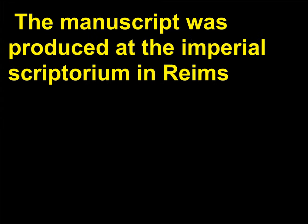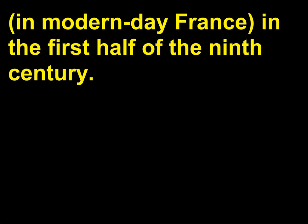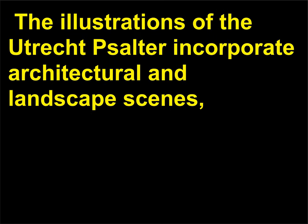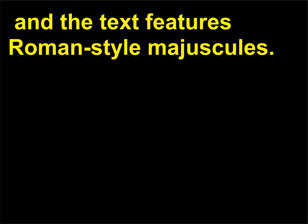The manuscript was produced at the Imperial Scriptorium in Reims, in modern-day France, in the first half of the 9th century. The illustrations of the Utrecht Psalter incorporate architectural and landscape scenes, and the text features Roman-style majuscules.